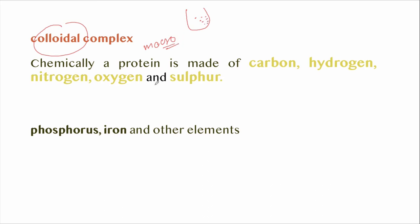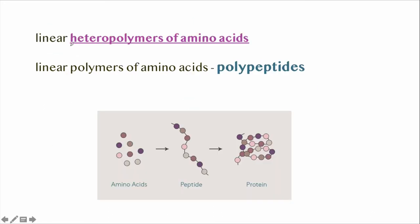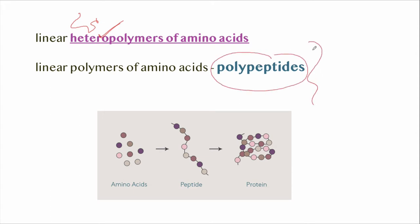Chemically, a protein is made up of carbon, hydrogen, nitrogen, oxygen, and sulfur. But some proteins additionally contain phosphorus, iron, and some other elements. Proteins are variously folded, linear heteropolymers of amino acids. The linear polymer of amino acids is known as a polypeptide. Amino acids link to form a peptide, and peptides form a protein.